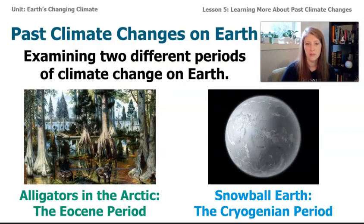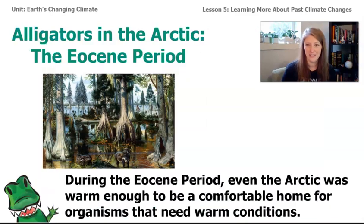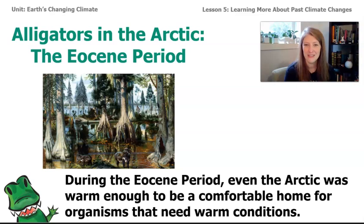We're going to read two parts of the article. The first talks about a time period in Earth's past called the Eocene — you might have heard of the Jurassic or Triassic periods from discussions about dinosaurs, but the Eocene is different. There's also the Cryogenian period. During both of these periods Earth was very different. In the Eocene, the Arctic was so warm that reptiles could live there comfortably, even in winter when there's no sun.